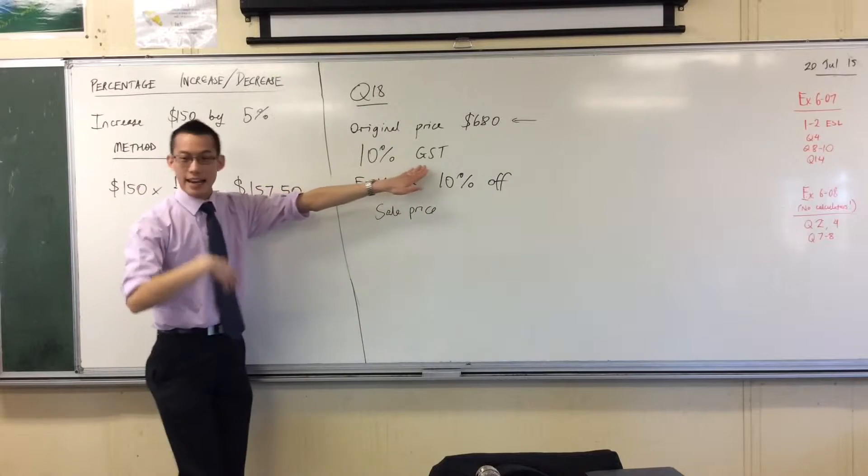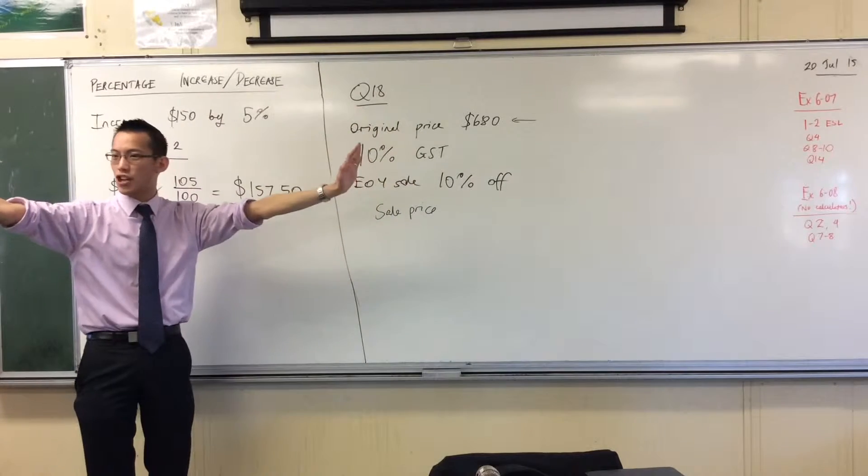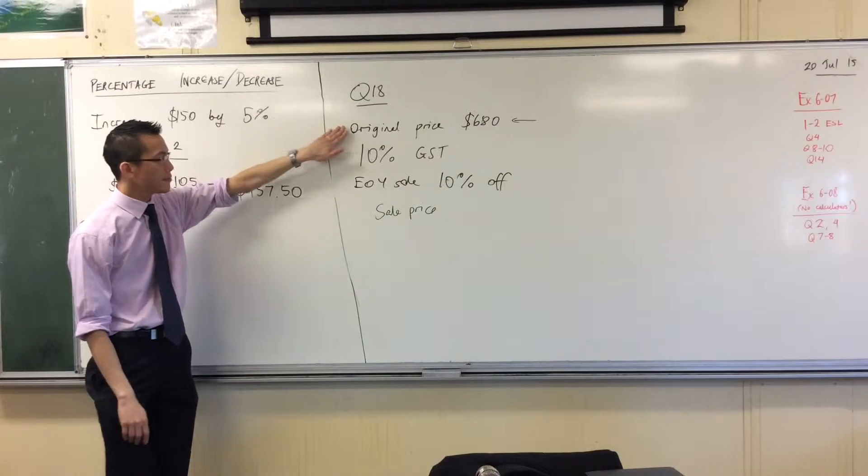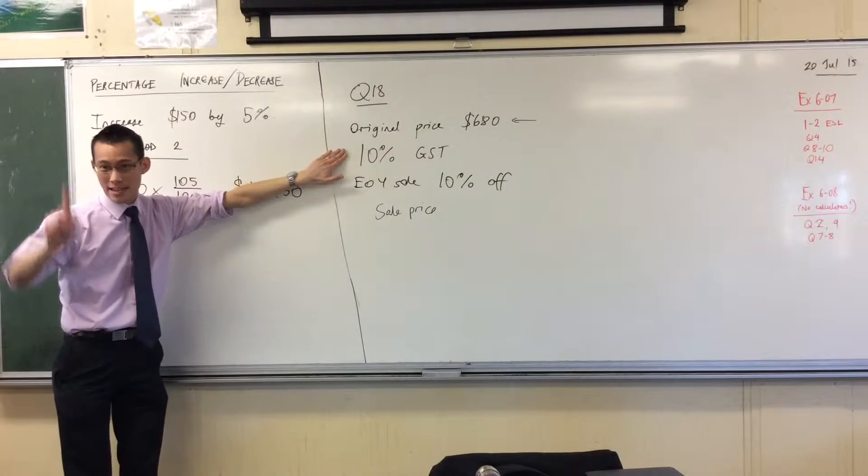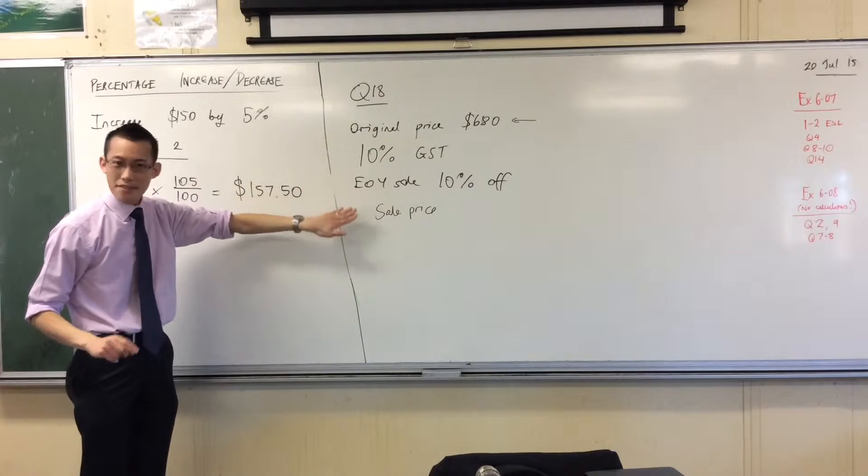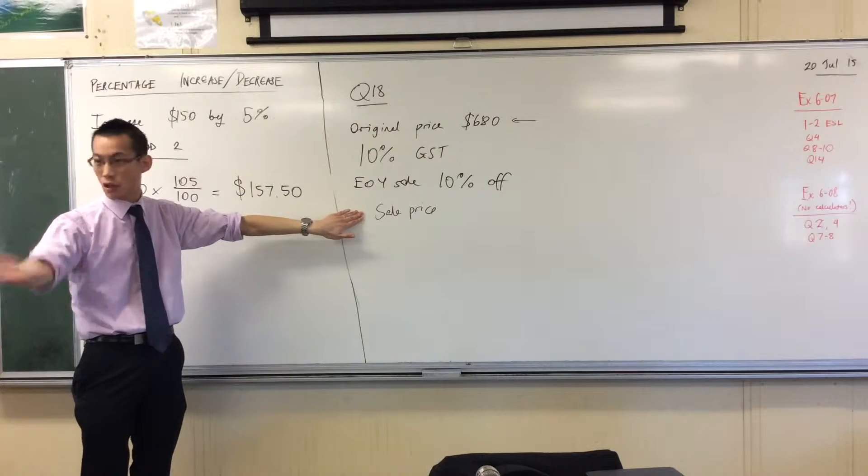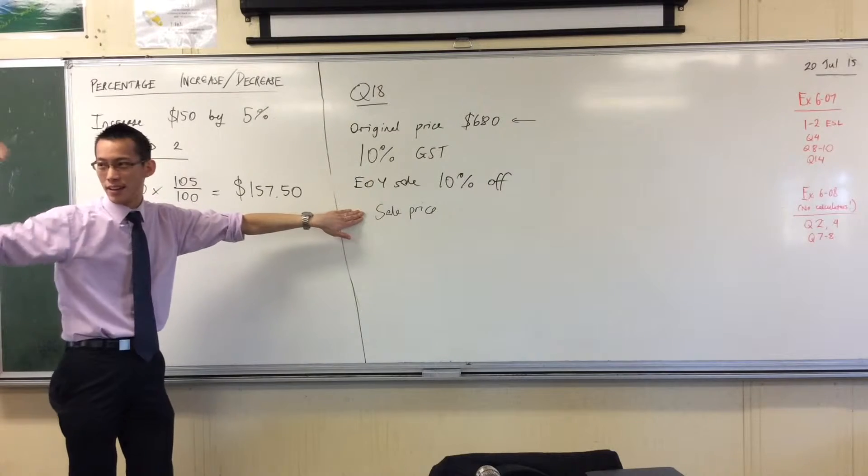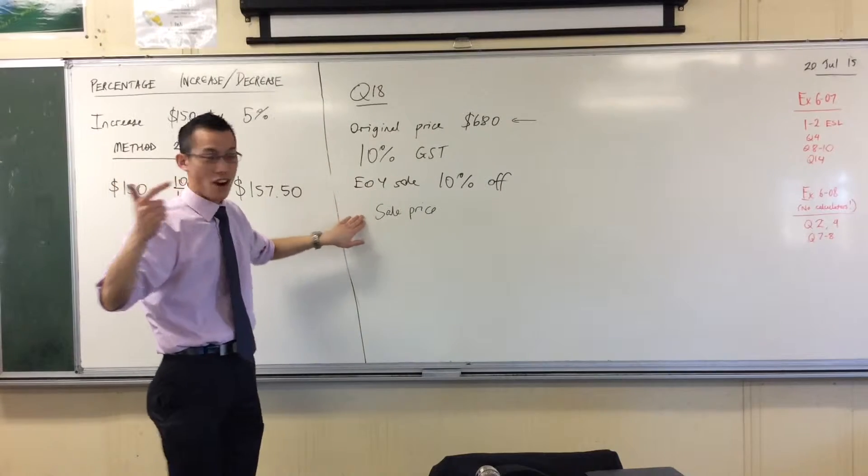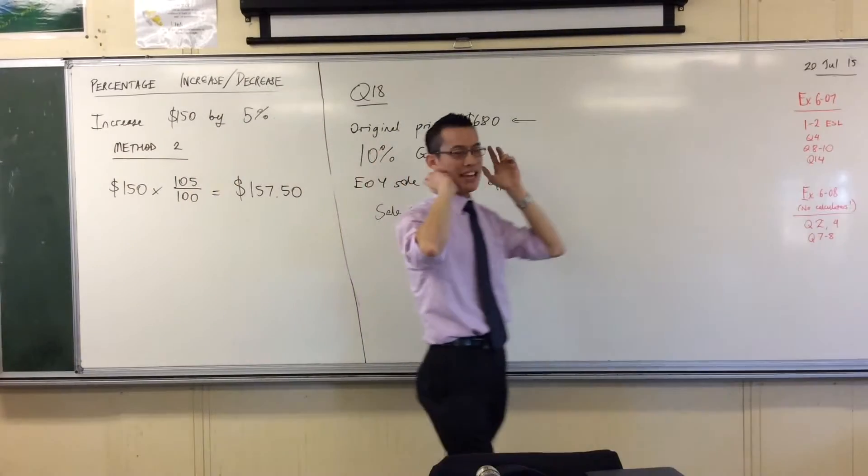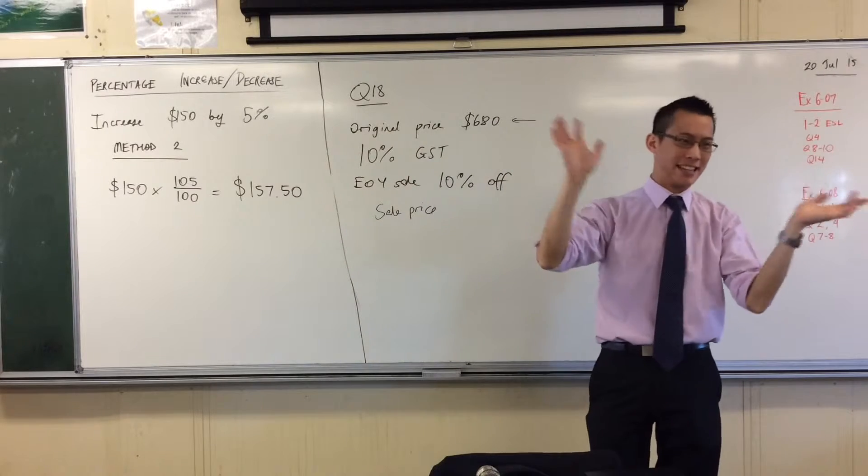So GST is an extra tax. Let me give you the picture before I ask you to say an answer. Original price, it gets increased by 10%, then it gets decreased by 10%, and that's the sale price that gets sold to consumers. Is this going to be option one, more than, option two, less than, option three, equal to the original? Ready? Got an idea in your head? If you're absolutely unsure, just shout out anything.